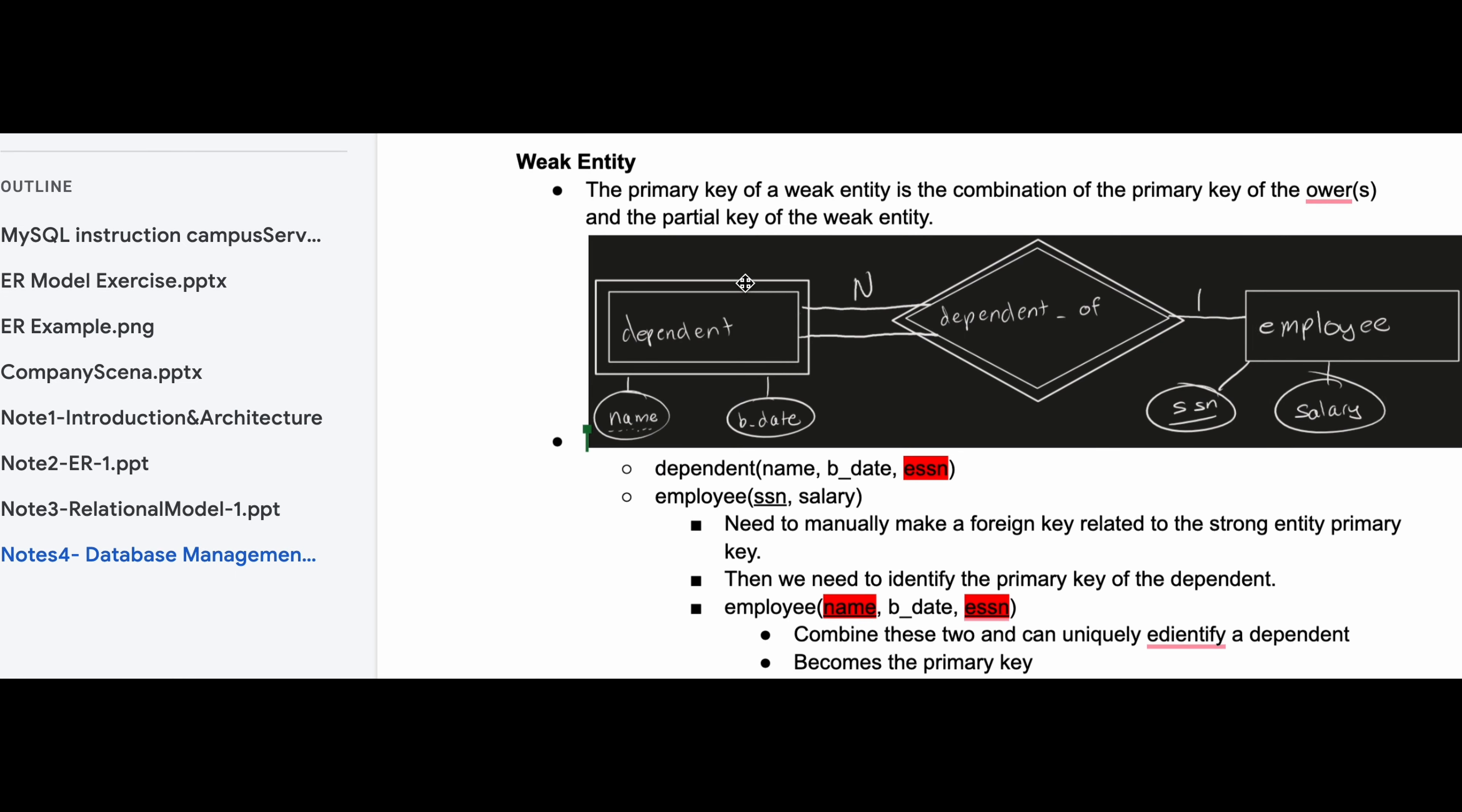So now we're looking at weak entity. The primary key of a weak entity is the combination of the primary key of the owner and the partial key of the weak entity.